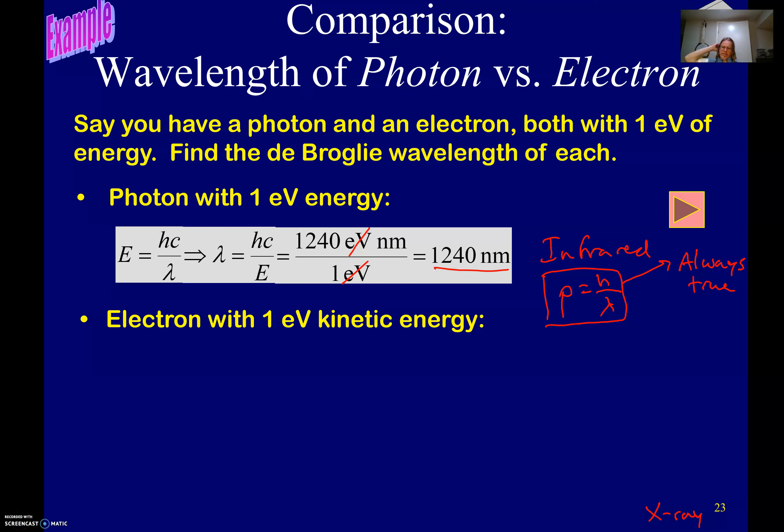Okay, so where we left off is somewhere about a photon with 1 eV, infrared, about 1240 nanometers. Now let's do the electron.